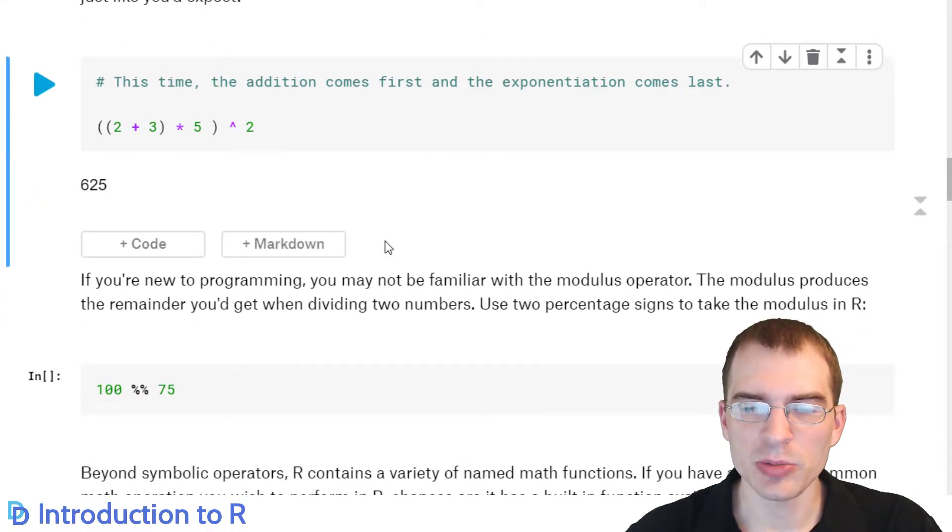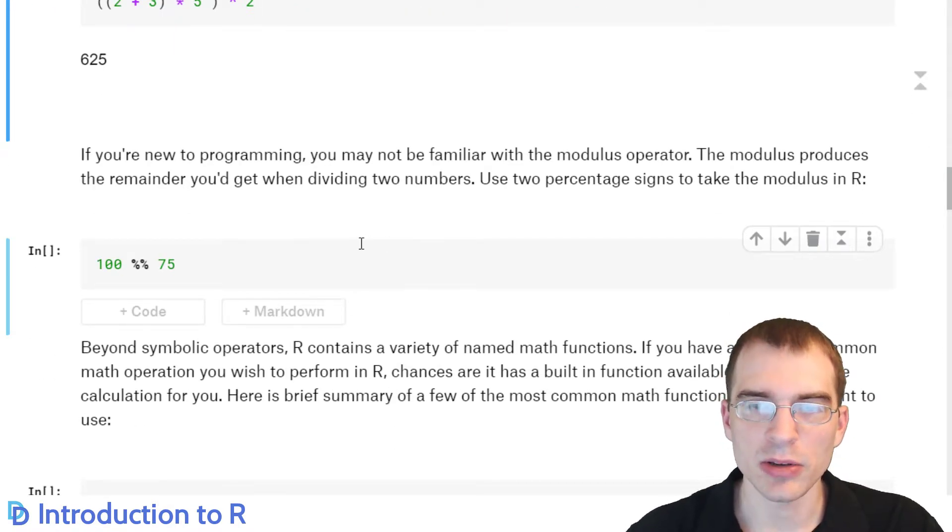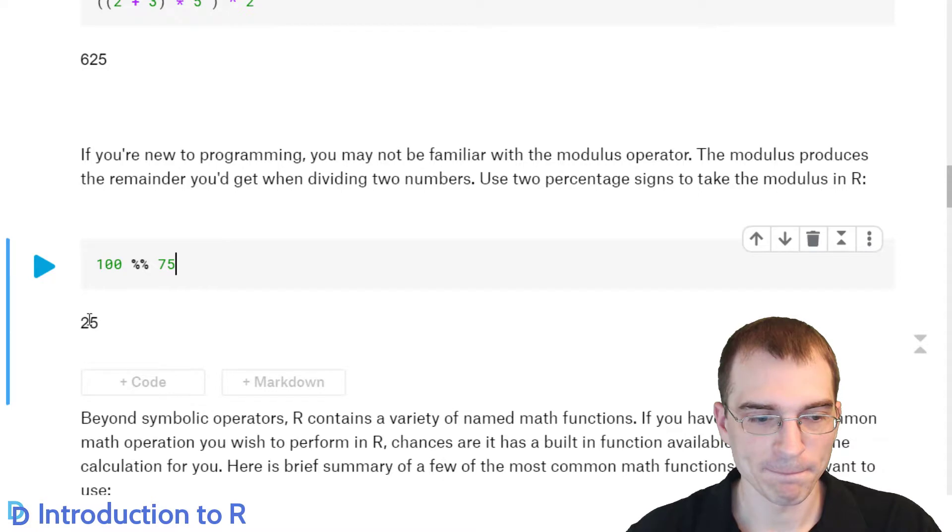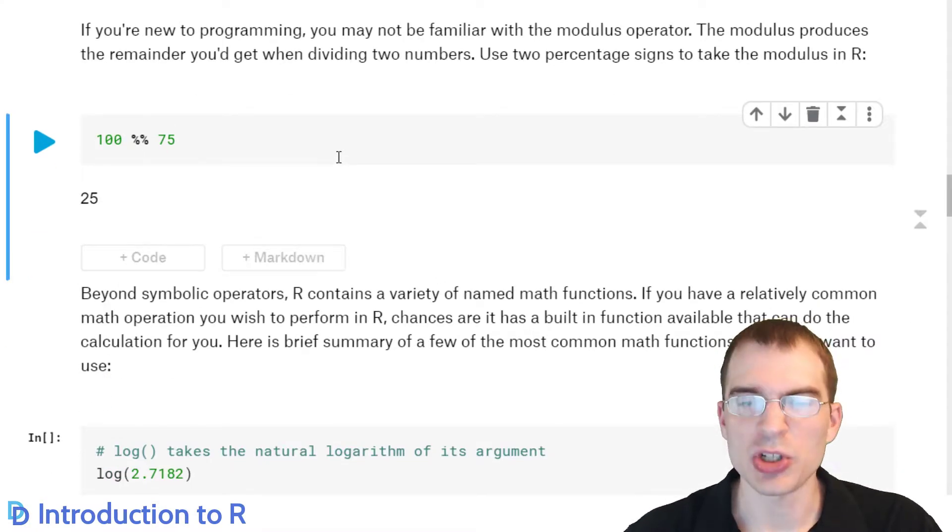If you're new to programming, you may not be familiar with the modulus operator or modulo. It's another common operator used in programming. In R, to do the modulo, it's a double percentage sign like this. What the modulus does is it gives you the remainder when you take one number and divide it by another. So in this case, we're taking 100, dividing it by 75, and getting the remainder of that operation. The remainder should be 25. It's just a good thing to know. It can come up in certain situations.